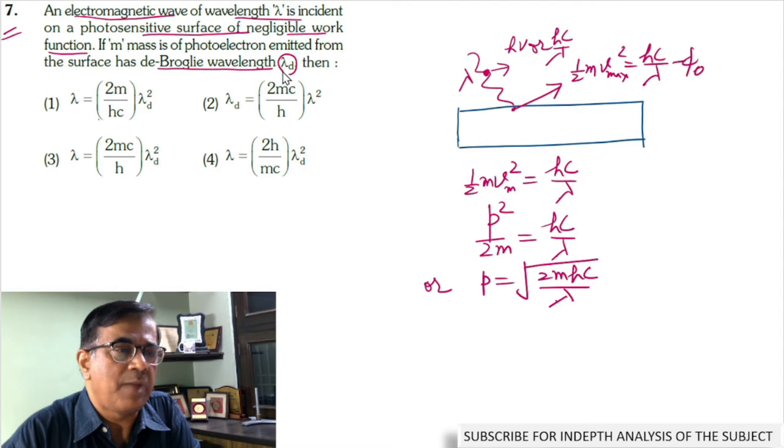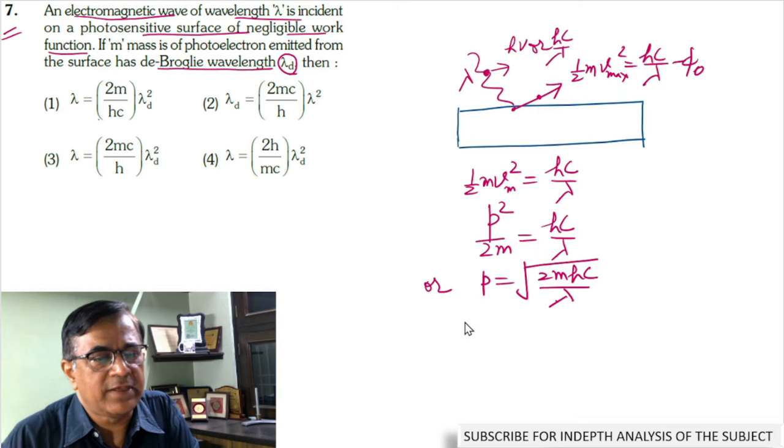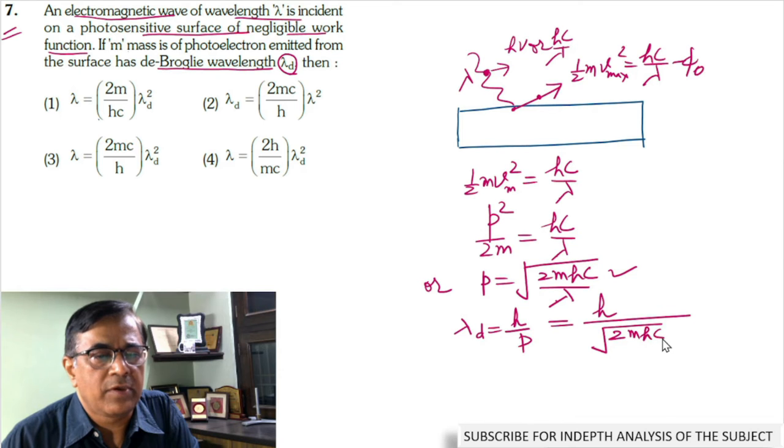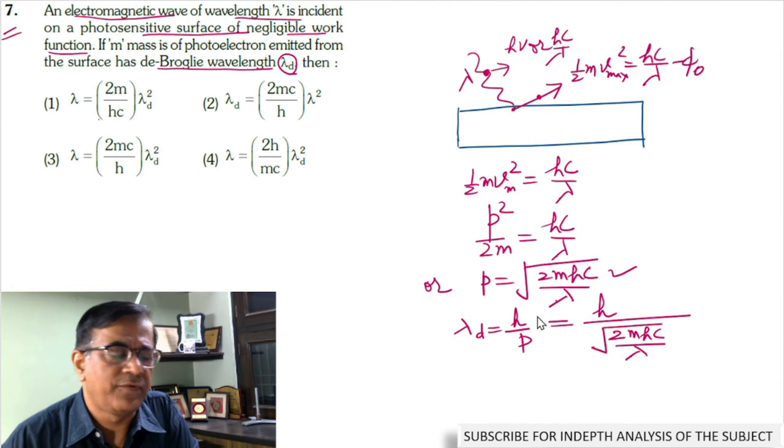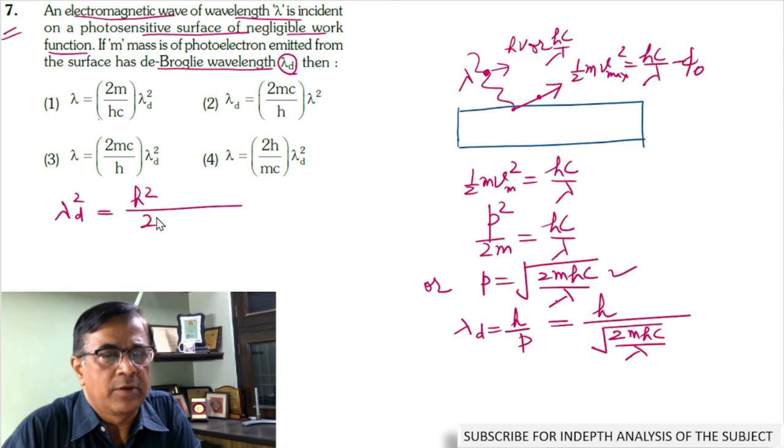Lambda D is the De Broglie wavelength of the emitted electron, given by lambda D equals H by P. This equals H divided by square root of 2m Hc by lambda. Squaring both sides, lambda D square equals H square upon 2m Hc by lambda.